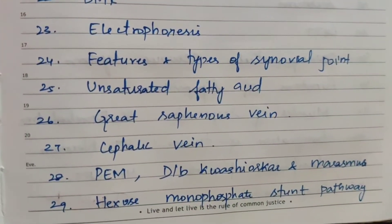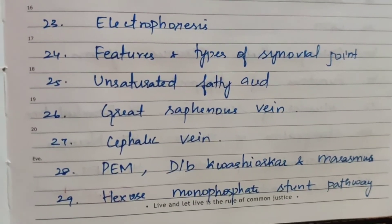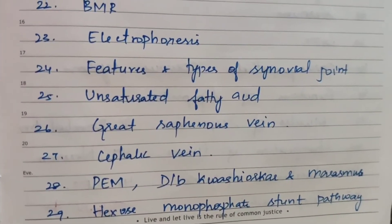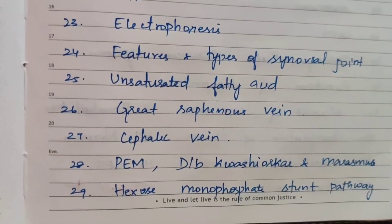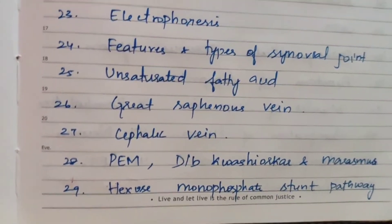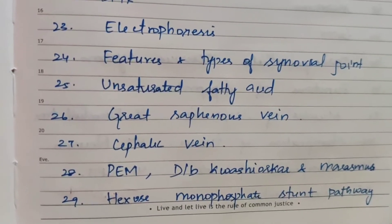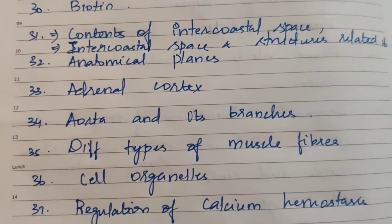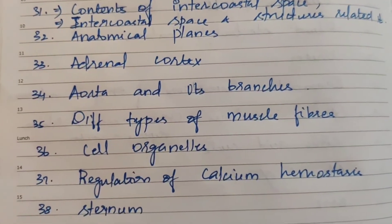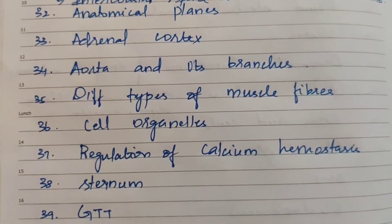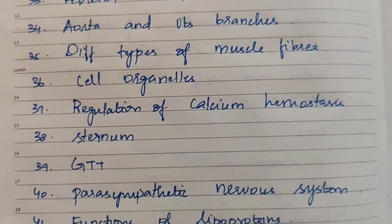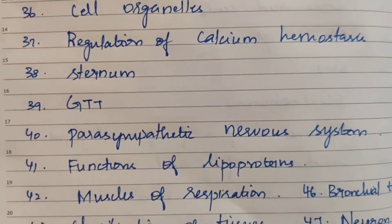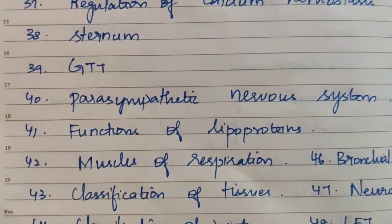Additional 5-mark topics: features and types of synovial joint; unsaturated fatty acids; great saphenous vein; cephalic vein; protein energy malnutrition; difference between kwashiorkor and marasmus; hexose monophosphate shunt pathway; biotin; contents of intercostal space; anatomical planes; adrenal cortex; aorta and its branches; different types of muscle fibers; cell organelles; regulation of calcium homeostasis; sternum; glucose tolerance test (GTT).